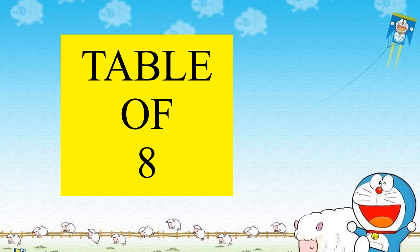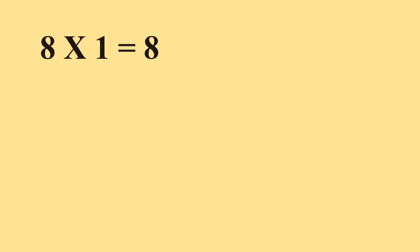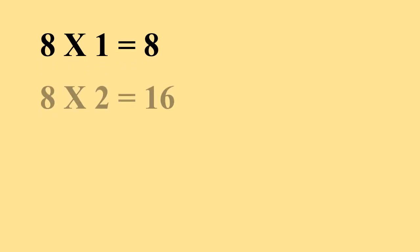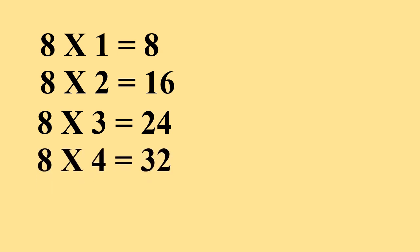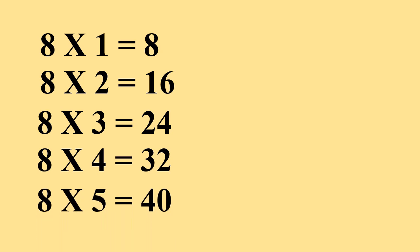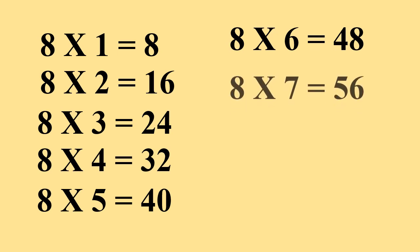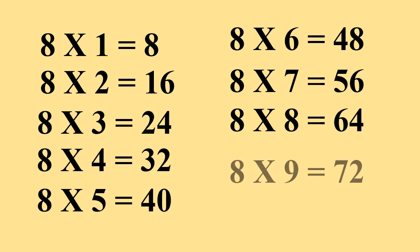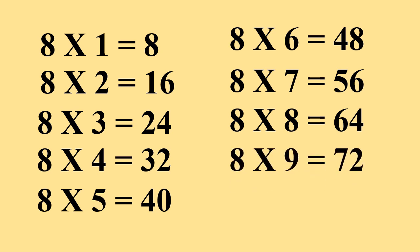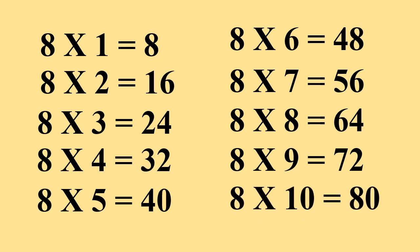Table of 8. 8 1s are 8. 8 2s are 16. 8 3s are 24. 8 4s are 32. 8 5s are 40. 8 6s are 48. 8 7s are 56. 8 8s are 64. 8 9s are 72. 8 10s are 80.